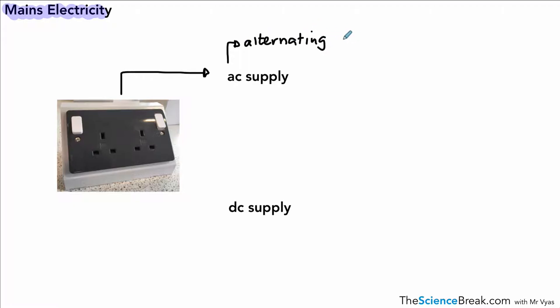alternating current. AC supply means alternating current, and the reason why we have alternating current is because the potential difference reverses. The potential difference reverses, and it actually reverses quite often. It reverses 50 times per second. 50 times per second, that means the current is going to change direction or reverse 50 times every second as well.